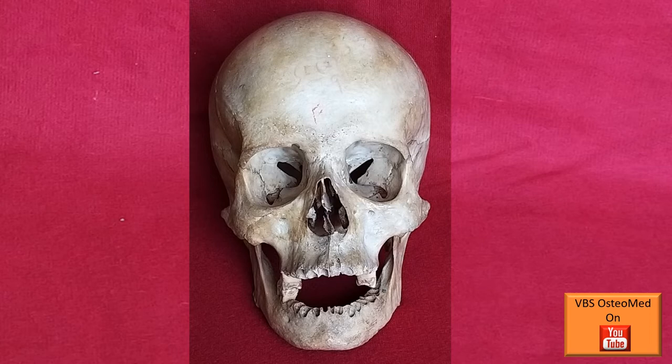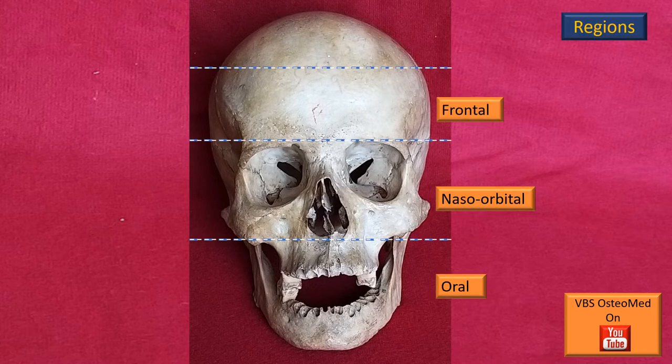Dear friends, welcome to this edition of VBS OsteoMed. The topic we are covering is the norma frontalis, orbital region — this is part 2 of the video. We have seen the previous slide where we divided the region into three zones: frontal, naso-orbital, and oral. In part 1 we finished the frontal region; now in part 2 let's discuss the naso-orbital region.